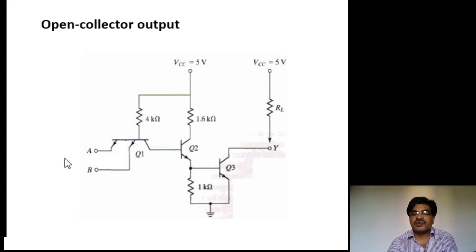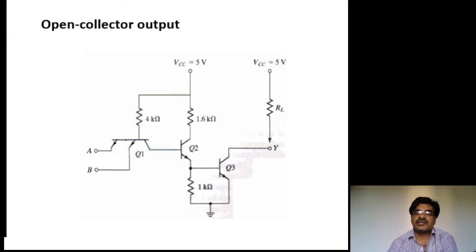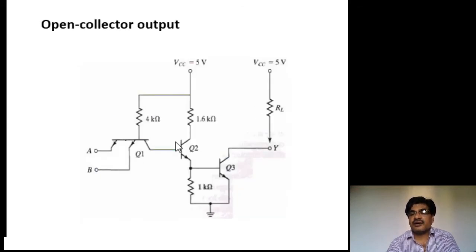Now let us see the operation. Suppose both inputs A and B are zero. Applying 0.2 V means the junction diodes are in forward biasing. Therefore at the base of transistor Q1 the voltage becomes 0.9 V — by KVL, the junction voltage 0.7 V plus applied voltage 0.2 V equals 0.9 V at the base of Q1. But 0.9 V is not enough to turn on transistors Q2 and Q3.